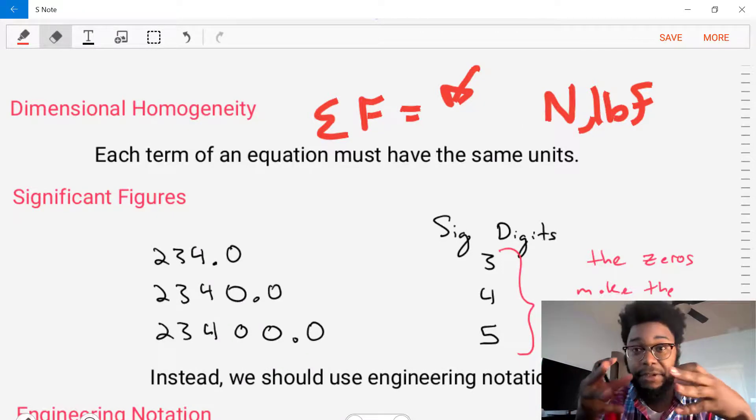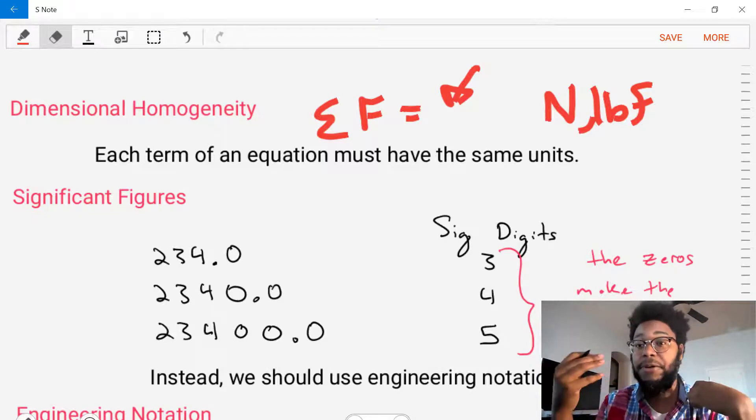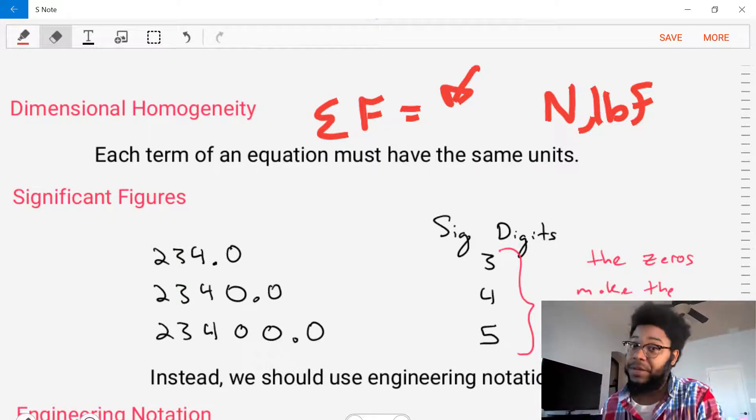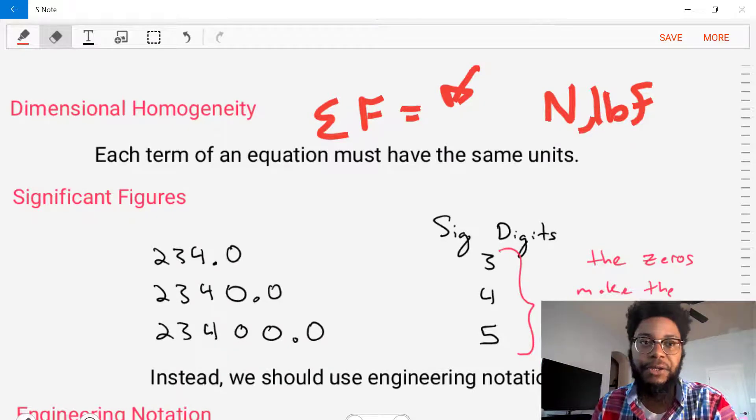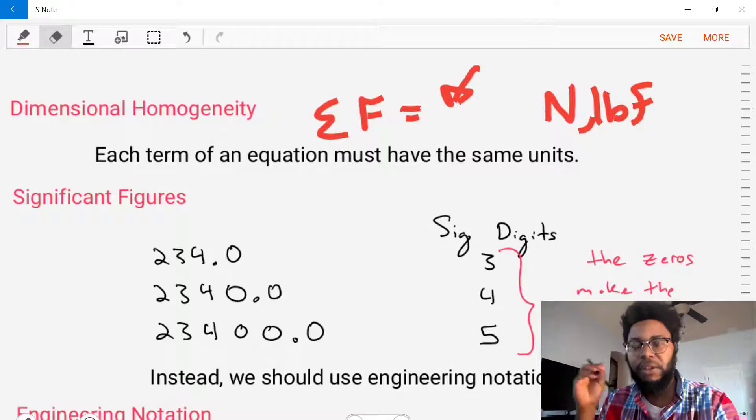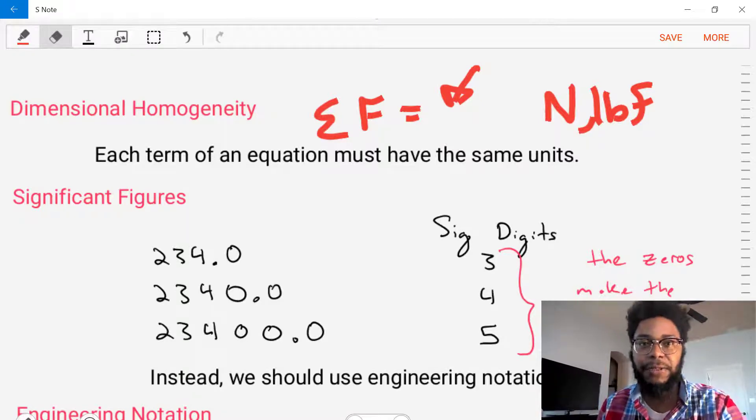And if at the end of the calculation, if we find something else, say we find newtons times meters, then that means we made a mistake somewhere in our equation. We didn't actually write the equation correctly to get the correct final units. And that is the concept of dimensional homogeneity.